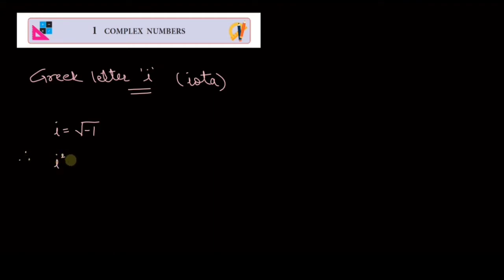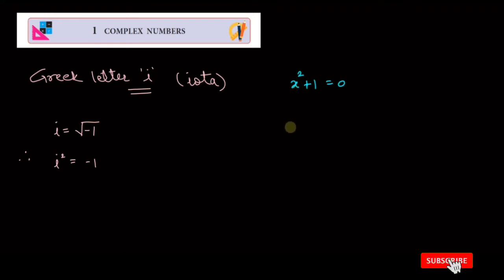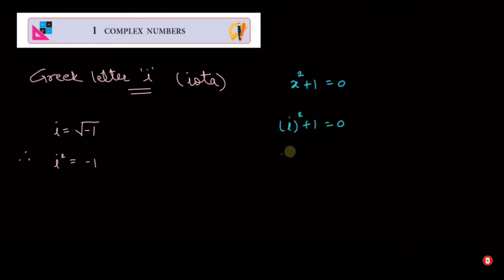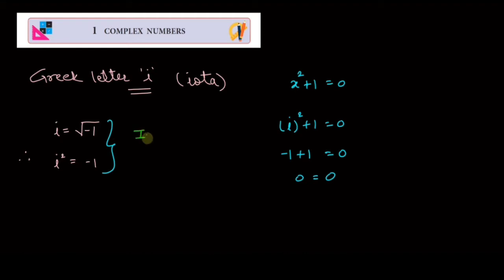If you square both sides, you get i² = -1. Now, going back to our equation x² + 1 = 0, if we put i in place of x and take its square and solve it, you will find that both sides equal zero. In this way we found a number satisfying our equation, and such a number is called an imaginary number.